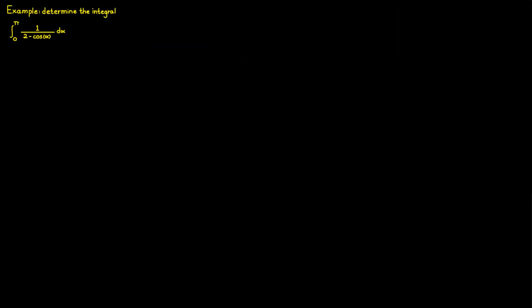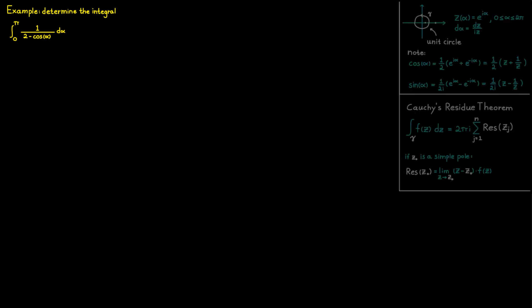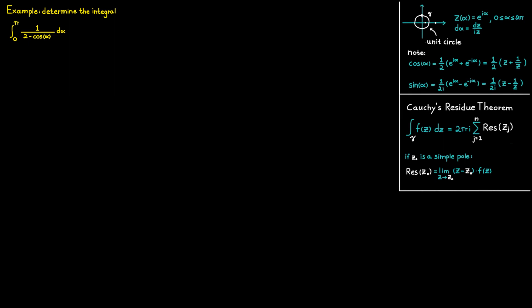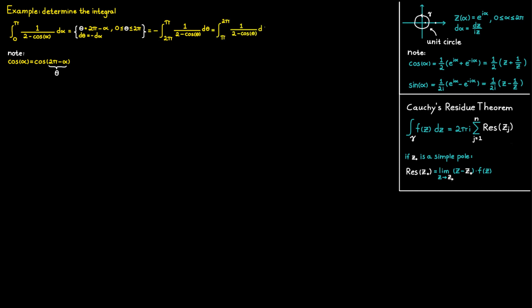In this second example, we want to determine a real integral, but notice that it is written in the wrong form: it goes from zero to pi, but we need it to go from zero to two pi to use the same method. We fix this with a clever substitution. Since cosine of alpha equals cosine of two pi minus alpha, we introduce the new variable theta equal to two pi minus alpha, so d theta equals minus d alpha. Substituting gives an integral from two pi to pi, and removing the minus sign by swapping the limits gives an integral from pi to two pi.